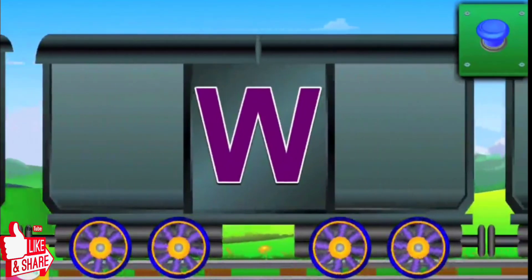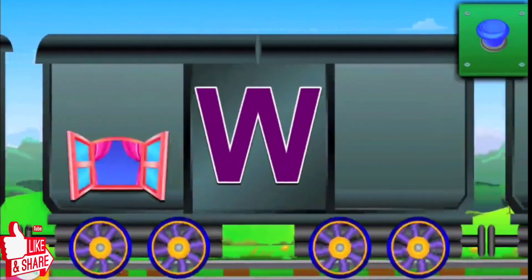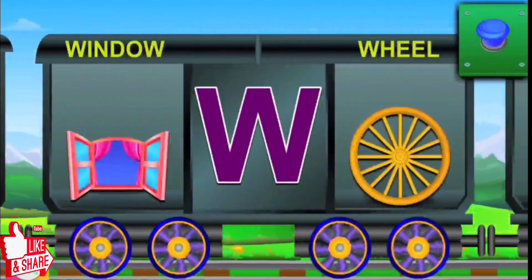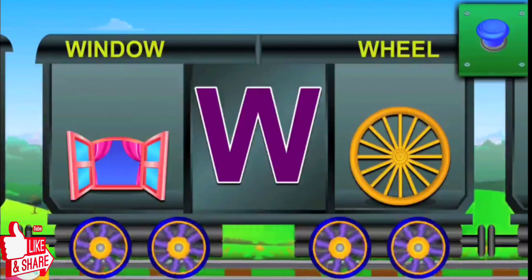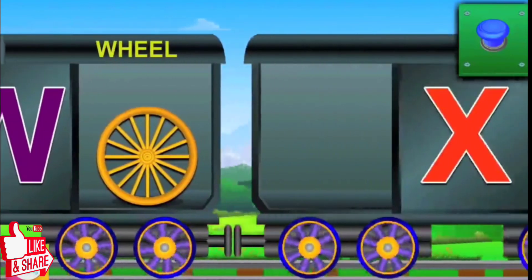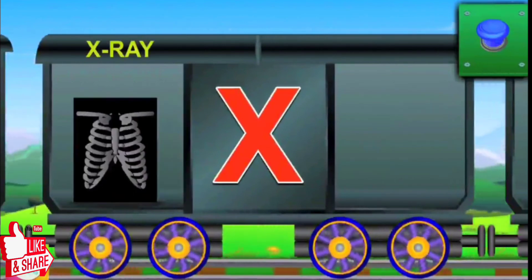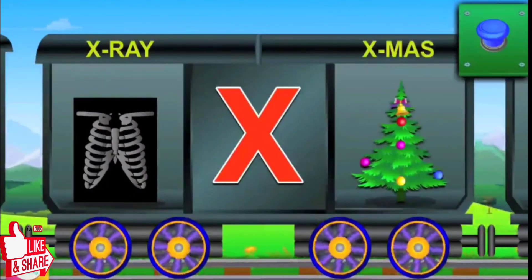This is W. W for window, and the window is open. W for wheel, and the wheel has spokes. Now comes X. X is for x-ray. X is for x-mas.